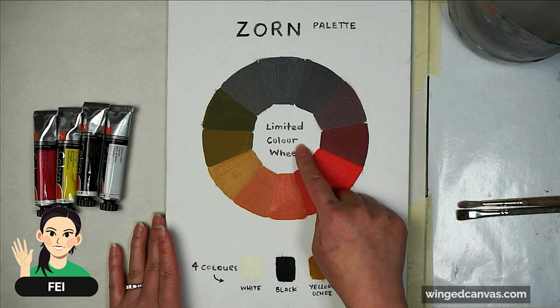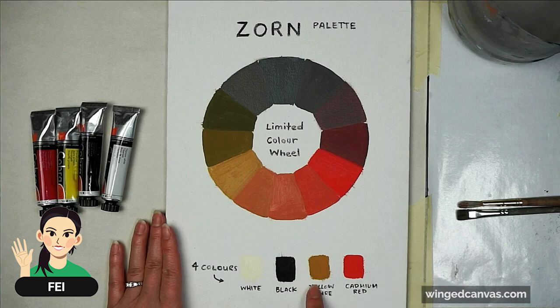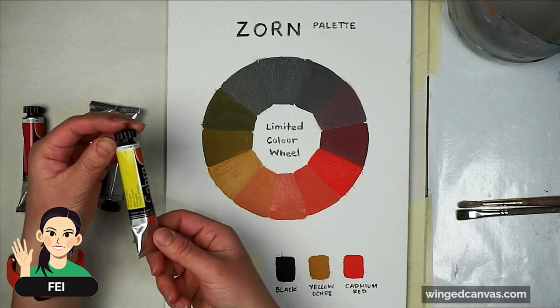Today I will be painting the Zorn palette, but instead of using yellow ochre and cadmium red, I will be using primary red and primary yellow, white and black.